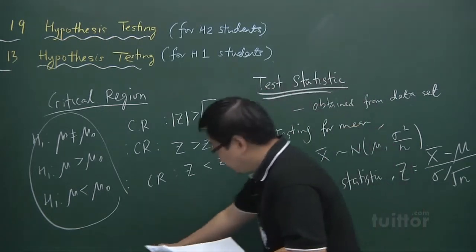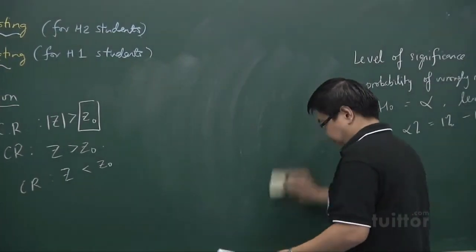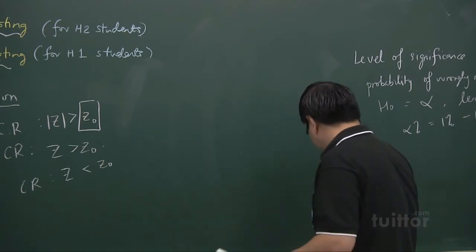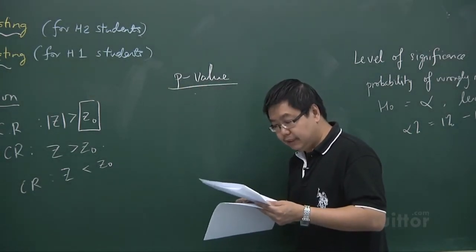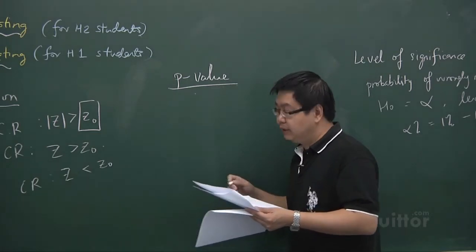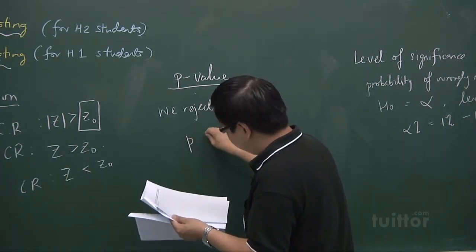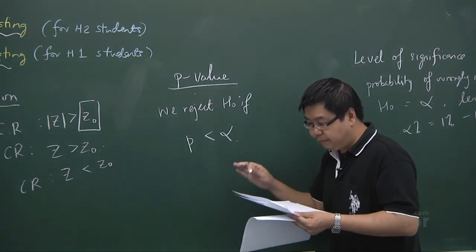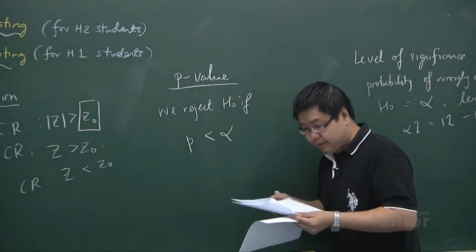The final concept is the p-value. The p-value is the smallest level of significance for which the null hypothesis would be rejected. The null hypothesis is rejected if the p-value is less than the level of significance. We will study more about the p-value in the next video clip.